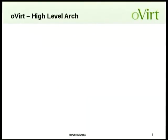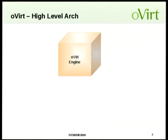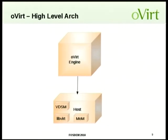Let me give you a quick high-level architecture overview of oVirt. We have the engine, which is a Java application running on JBoss. This is where all the logic resides and all decisions are made — scheduling decisions and others. All user requests are sent to the engine, which processes them. The engine then talks to the hosts that actually run the VMs. On each host we have an agent we call VDSM, which handles host-level configuration for storage and network, and handles everything related to VMs on that specific host.